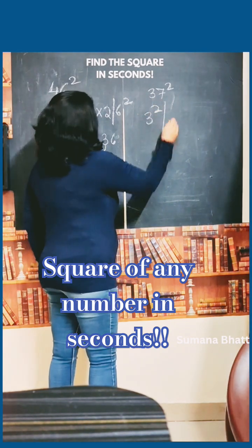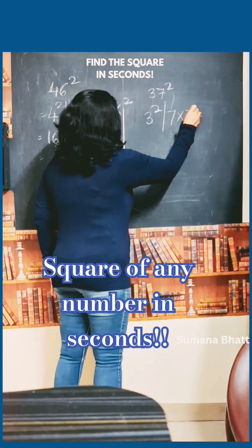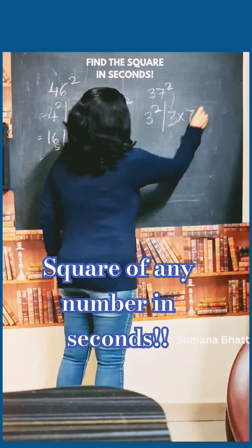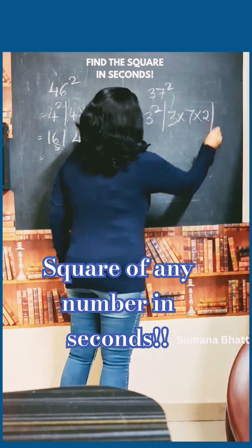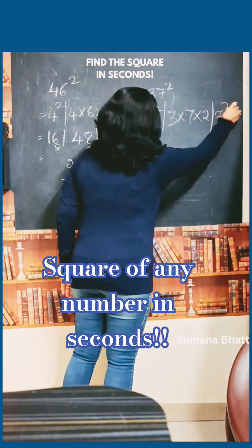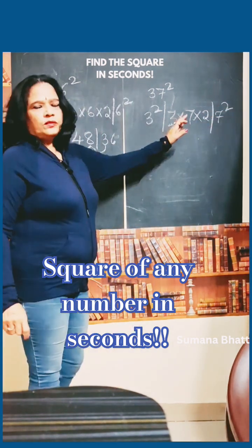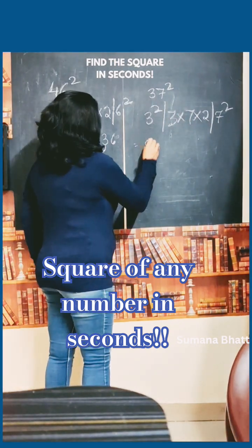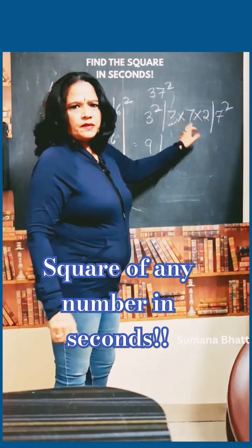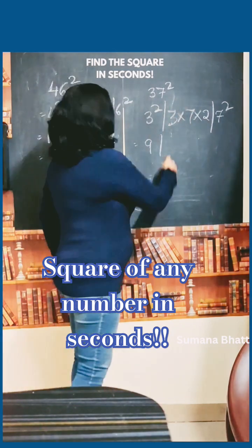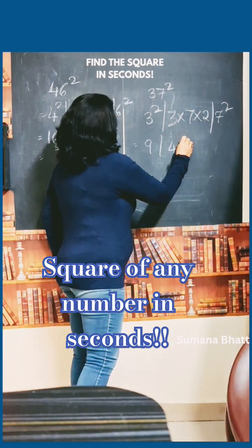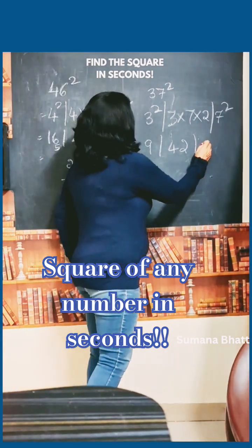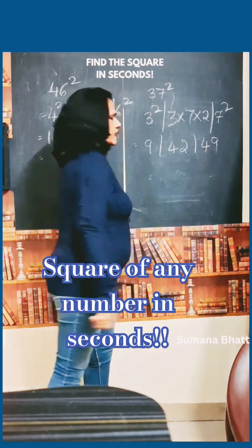Now for 37 square. Write it as 3 square, then 3 into 7 into 2, and 7 square. 3 square is 9. 3 into 7 into 2: 3 into 7 is 21, and 21 into 2 is 42. Draw the line and write the value of 7 square, which is 49.